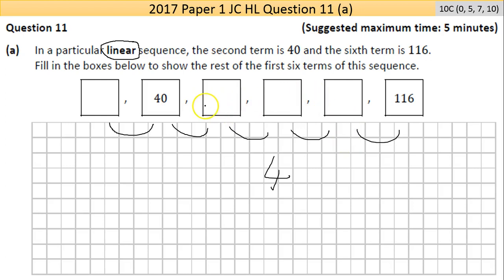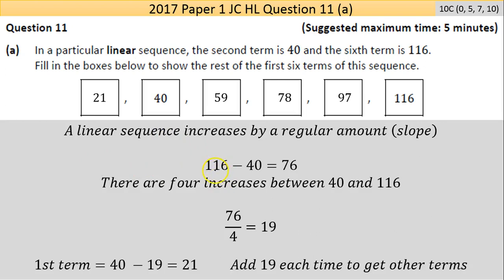Now if you take that away, because it's going up a regular amount, it should go straight to the answer here. It's 116 take away the 40. That's 76, so there's a difference of 76 between those two figures.